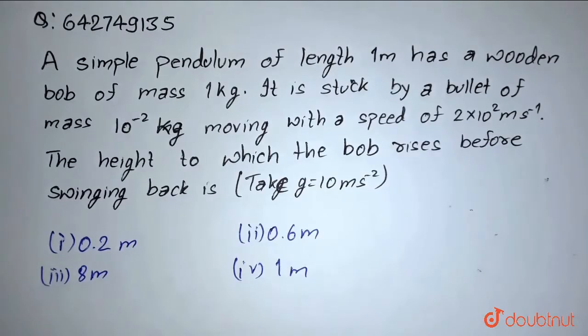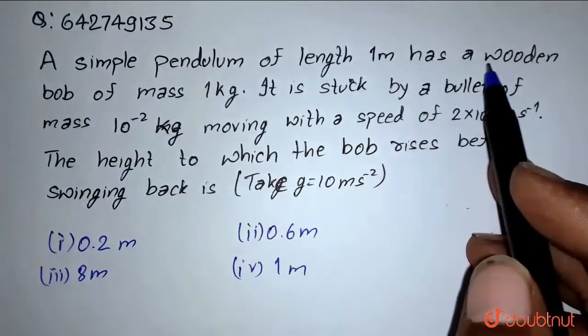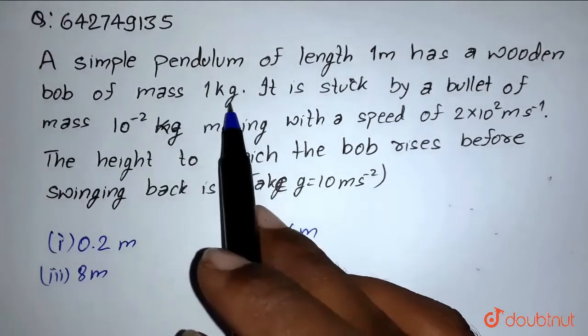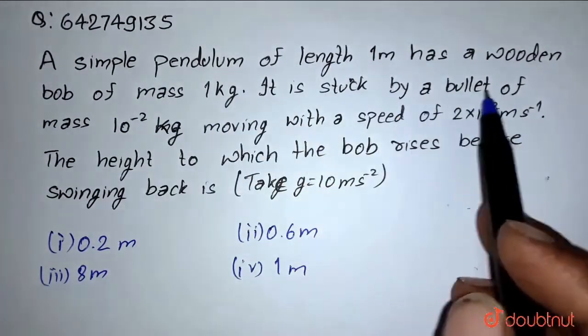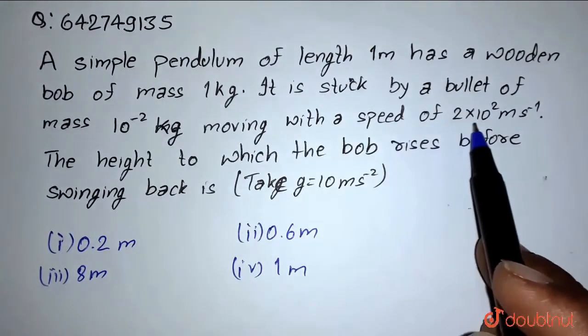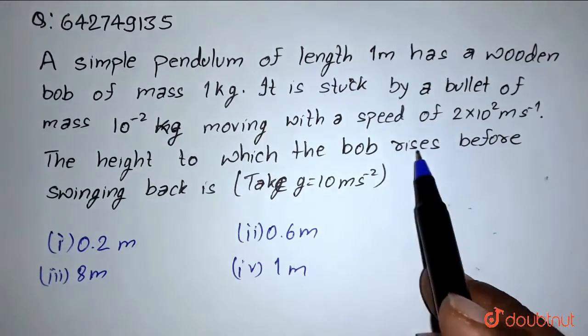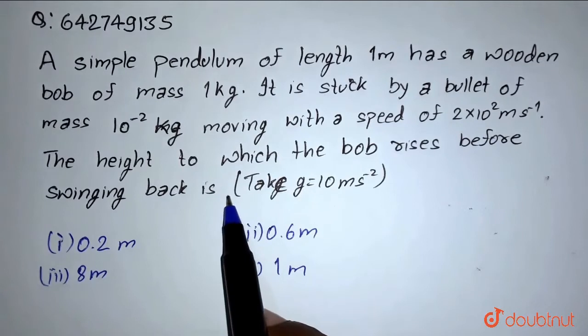Hello students, so here we have the question. A simple pendulum of length 1 meter has a wooden bob of mass 1 kilogram. It is struck by a bullet of mass 10^-2 kilogram moving with a speed of 2×10^2 meters per second. The height to which the bob rises before swinging back is...